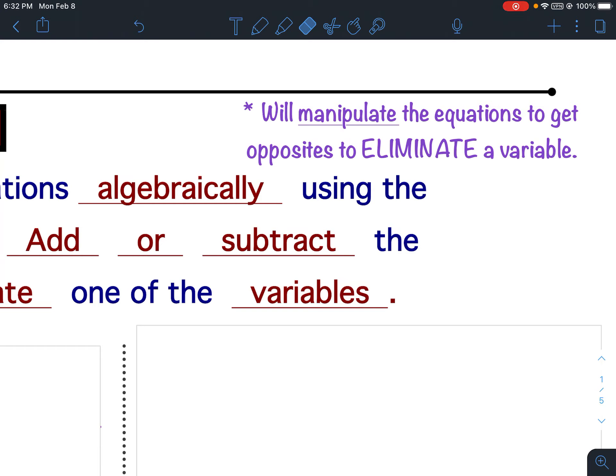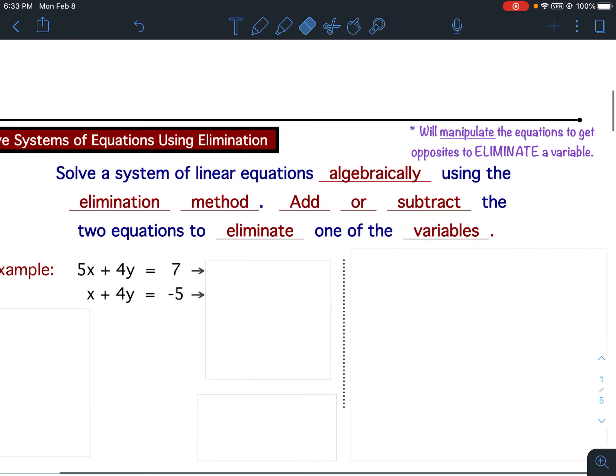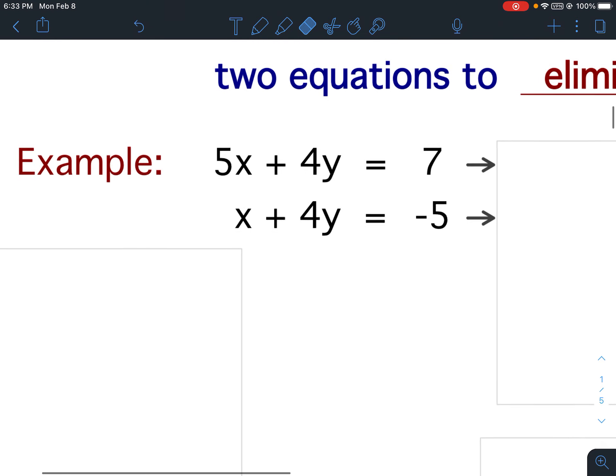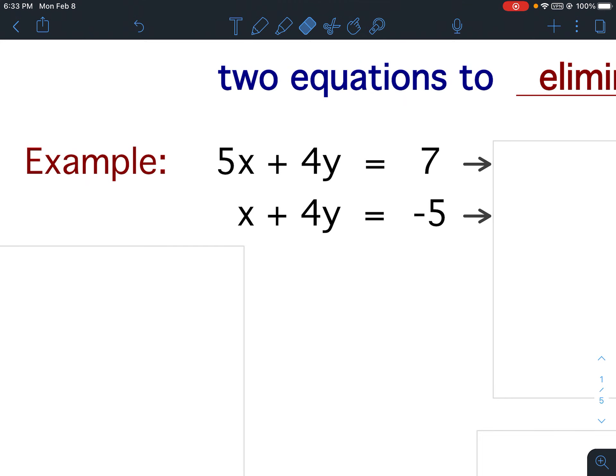So when I say we will manipulate, we're going to do something to these equations so we can get opposites. And then once we have the opposites, we can eliminate a variable term. In this case, we're going to be using multiplication to manipulate these equations. Let's look at this first example. We want opposites, but if you look at this, I don't have opposites.